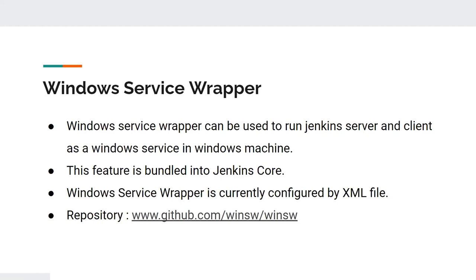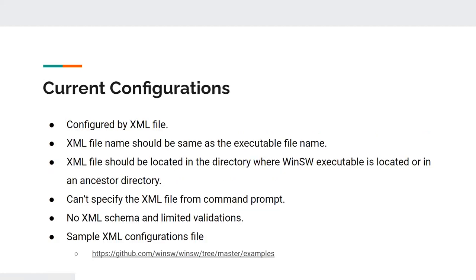You can find the project at the given link. The current configurations — meaning the configuration we had at the initial stage — are what this project updated. At the initial stage, we configured Windows Service Wrapper by an XML configuration file, and that file's name should be the same as the executable file name. The XML file should be located in the directory where the Windows Service Wrapper executable is located. Some problems at the initial stage: we couldn't specify the configuration file from the command line interface, and there was no XML schema validation.